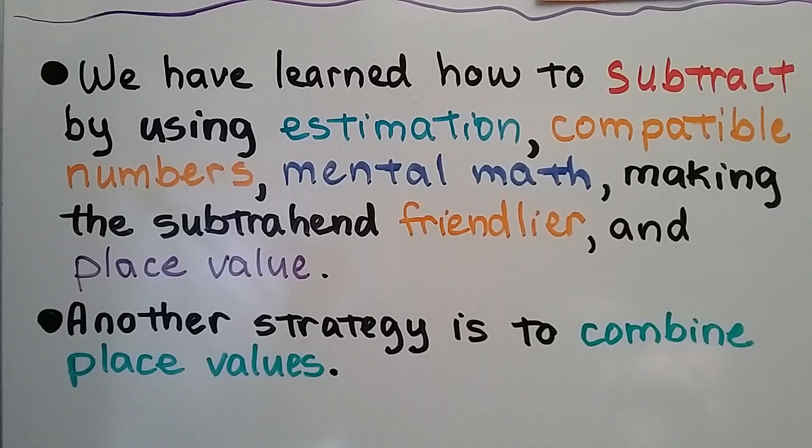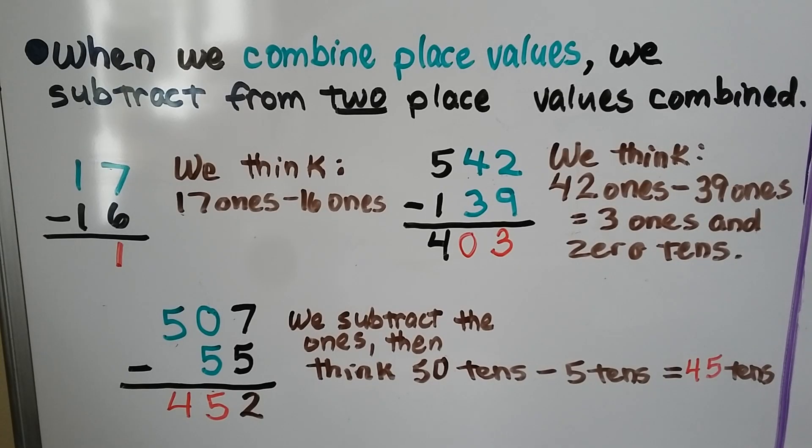Another strategy is to combine place values. When we combine place values, we subtract from two place values combined. If we have 17 minus 16, we just think 17 ones minus 16 ones, which equals 1.